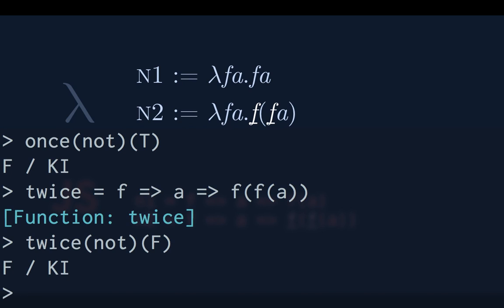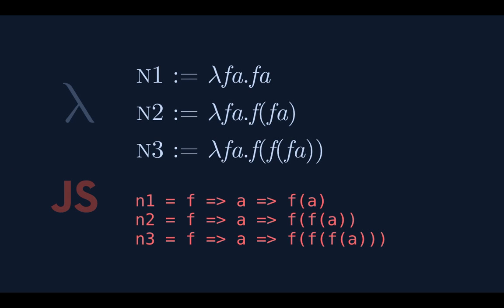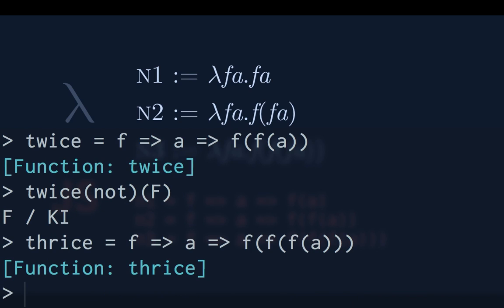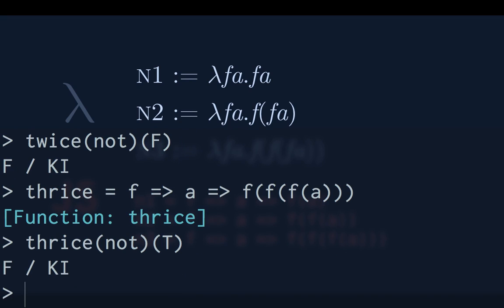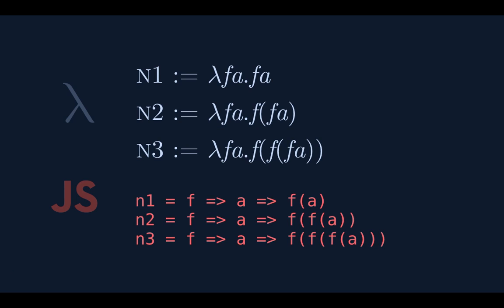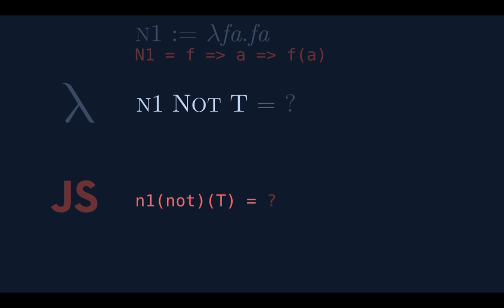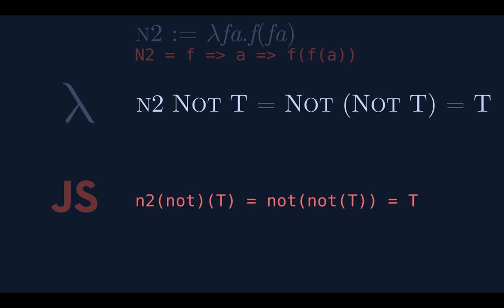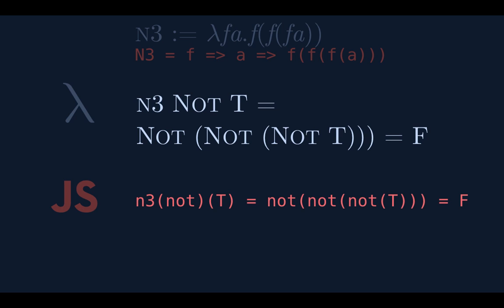Three times — that's thrice. Thrice takes a function and its argument and applies the function to the function to the function of the argument. Thrice not of true gives false, flipping you back and forth. You can see these building out — we have a number of hard-coded f's as our number system. Once not true is false, twice not true is true, thrice not true is false again.